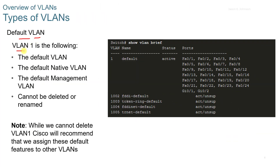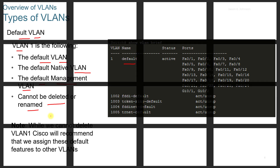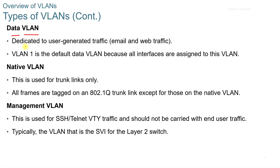The default VLAN is VLAN 1. That's the default VLAN, the default native VLAN, and the default management VLAN, and it cannot be deleted or renamed. While we cannot delete VLAN 1, Cisco recommends that you assign the default features to other VLANs. Data VLANs are dedicated to user-generated traffic such as email or web traffic, and VLAN 1 is the default data VLAN because all interfaces are assigned to it.